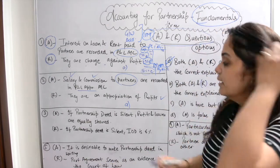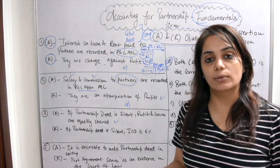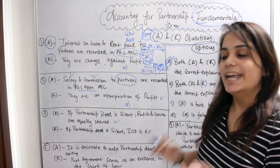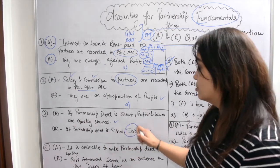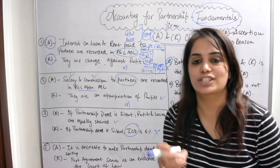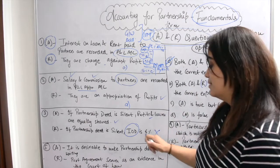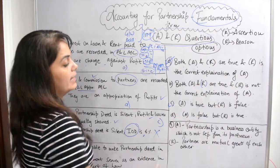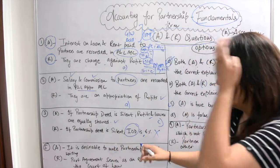Question three: Assertion — if a partnership deed is silent, profits and losses are equally shared. That is very true. If a partnership deed is made, it specifies how profits and losses are shared. If it is not made, profits and losses must be shared equally. Reason — if partnership deed is silent, interest on drawings is 6%. That is incorrect. If the deed is silent, interest on drawings is not charged at all. So assertion is correct but reason is wrong — the answer is Option C: A is true but R is false.